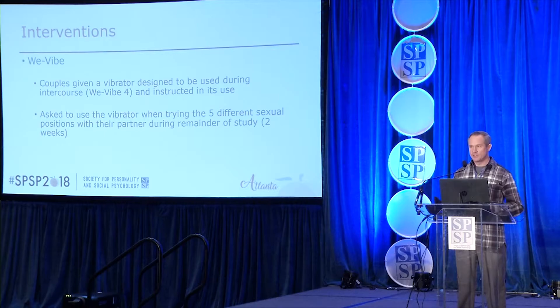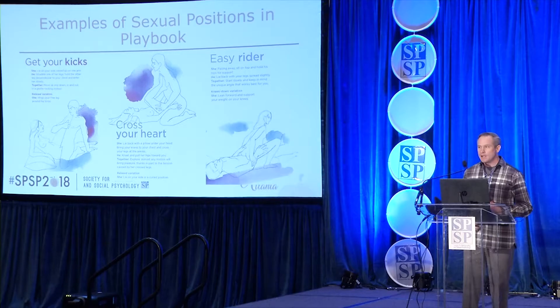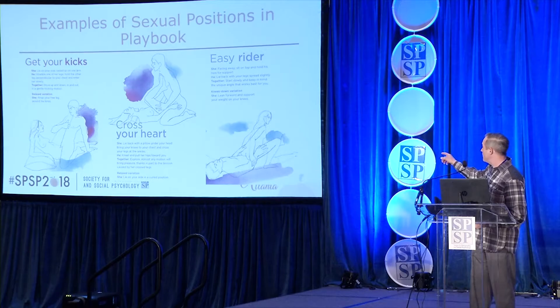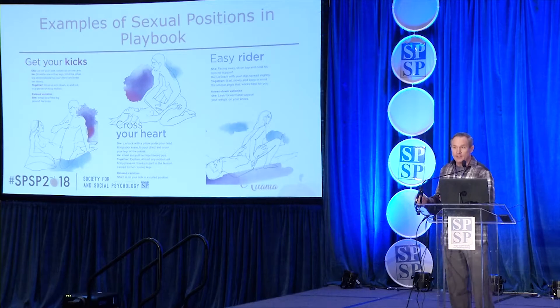I don't have time to go through all of that today, and we're still analyzing the data, but I'll show results for the primary hypotheses. Trigger warning—some pictures of people who are not real having sex. These are examples of three positions in the playbook: 'Get Your Kicks,' 'Cross Your Heart,' and 'Easy Rider,' otherwise known as reverse cowgirl. There are both images showing how to execute each position and written descriptions.